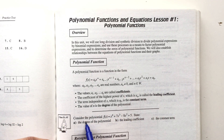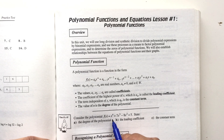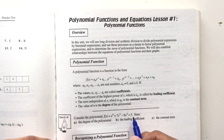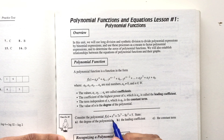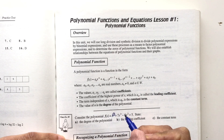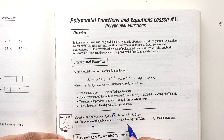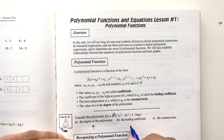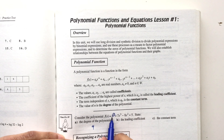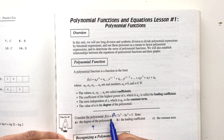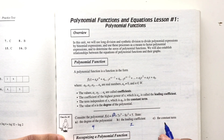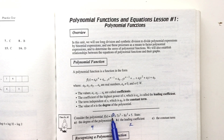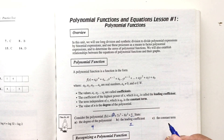Consider the polynomial f(x) = x⁴ + 7x³ - 8x² + 5. We want to state the degree of the polynomial. The highest exponent here is 4, so this has a degree of 4. The leading coefficient — the coefficient in front of the highest degree term — we don't have a written coefficient, which means we have a coefficient of 1. The constant term is the term with no variable attached, which is 5.